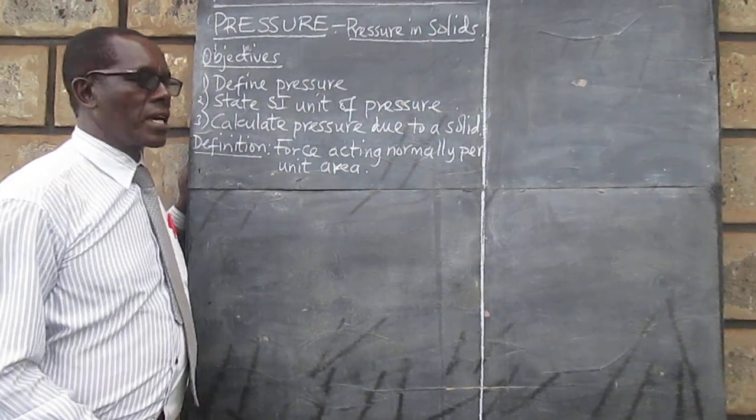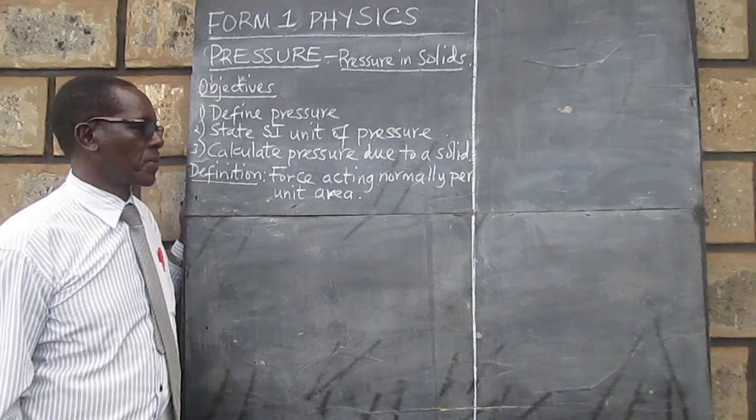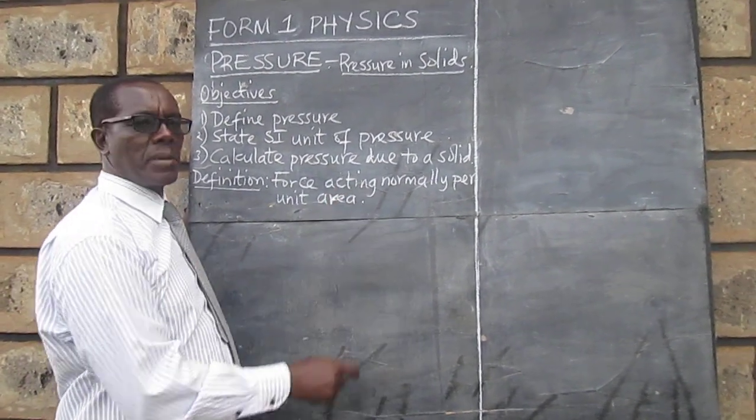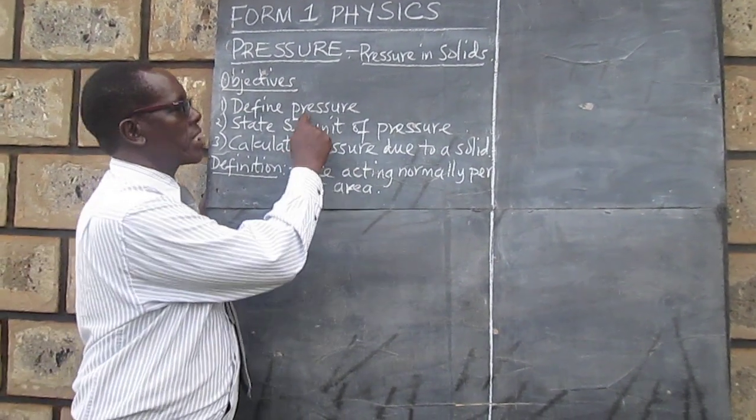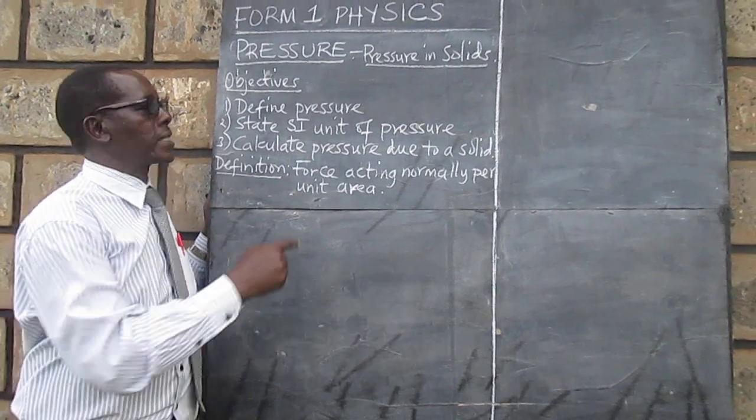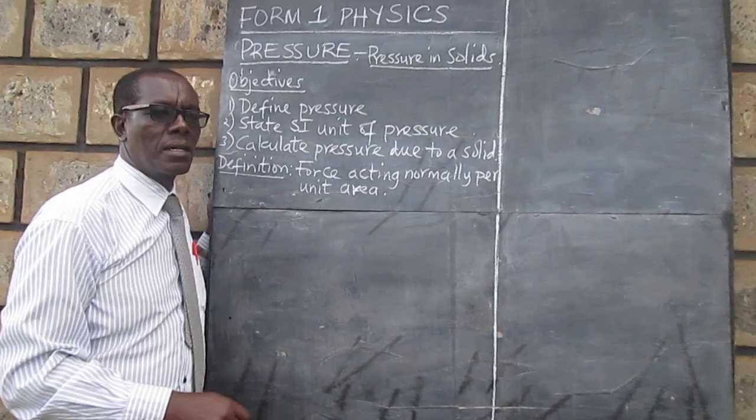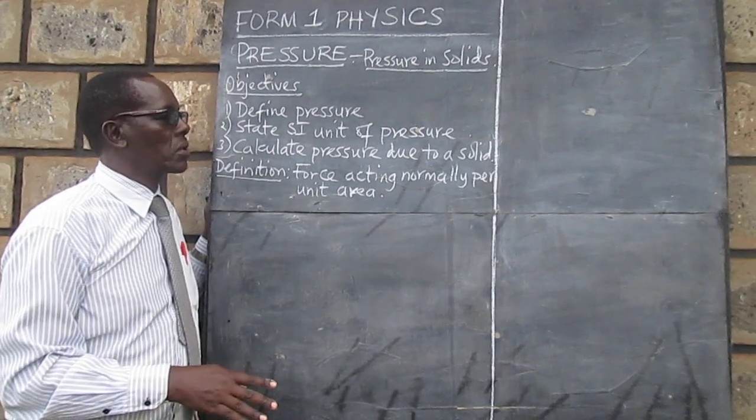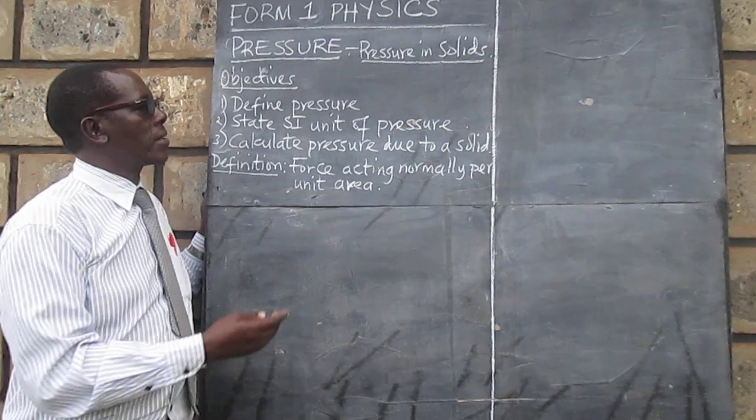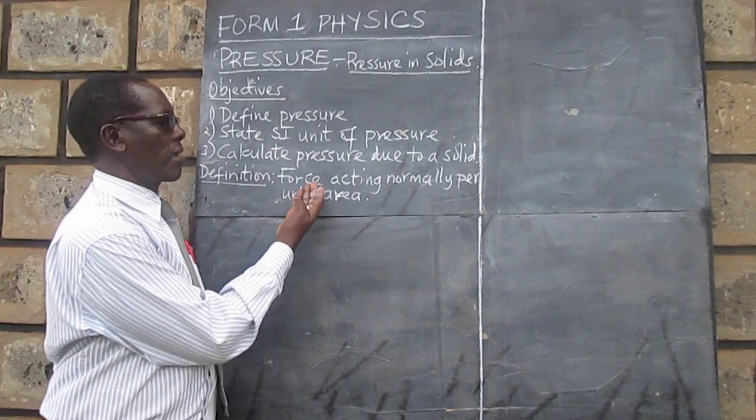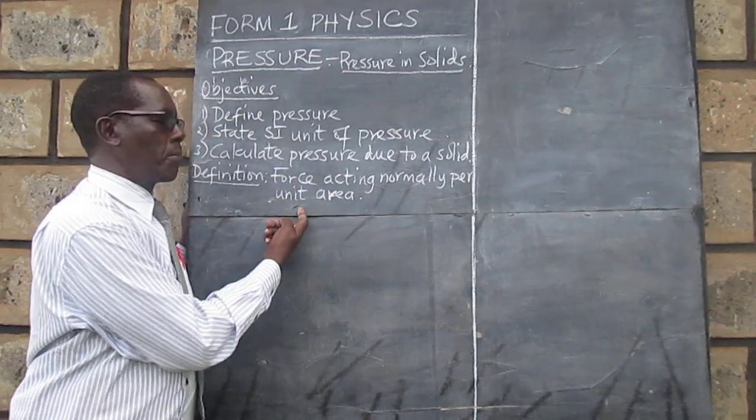Let's move straight on to the first objective where we are defining pressure. Before we look at this statement let us look at the word pressure. The pressure comes from the word press, and you know to press something is to apply a force on that particular item. So pressure is defined as the force acting normally per unit area.